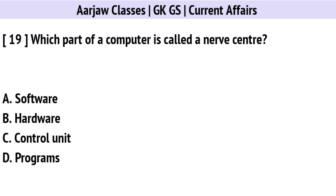Which part of a computer is called a nerve center? The correct option is C: Control Unit.